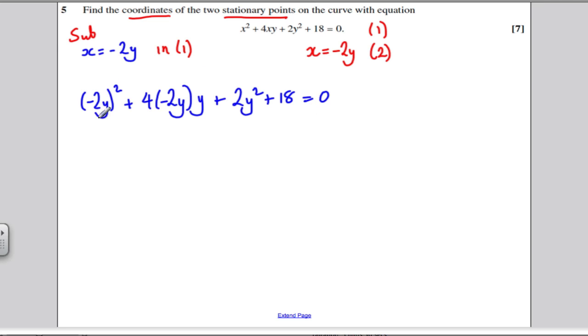Let's just tidy up. Minus 2y all squared is 4y squared. Minus 2y times 4 is minus 8y. Times another y. So, we'll be minus 8y squared. Plus our 2y squared. Plus 18 is 0.